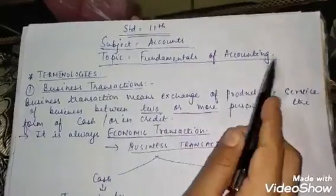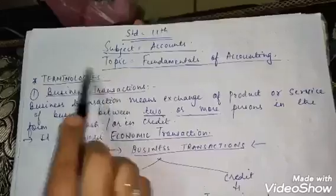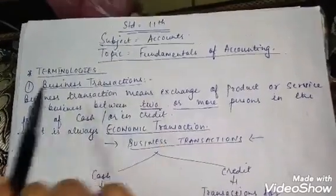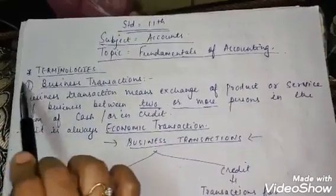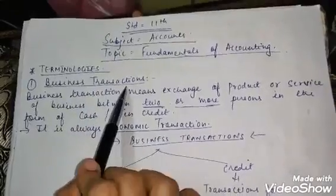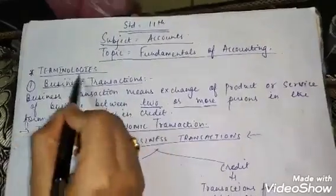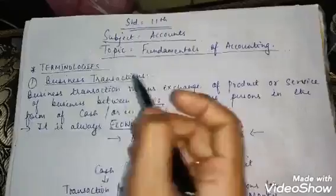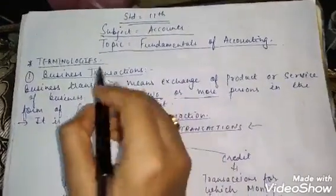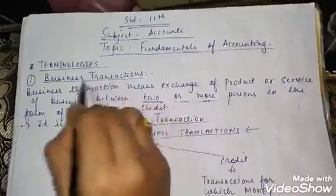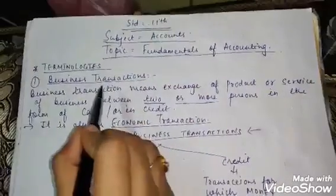Today's topic is Fundamentals of Accounting. I will cover the terminologies that are used in accountancy. The first terminology is Business Transactions. The word 'business' you already know. 'Transactions' is probably a new word for you — it means an activity, specifically a lending or exchange activity happening in a business.